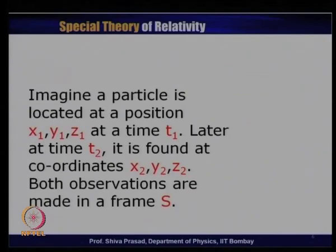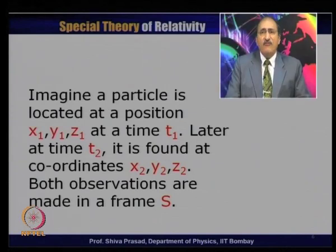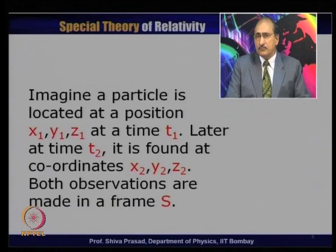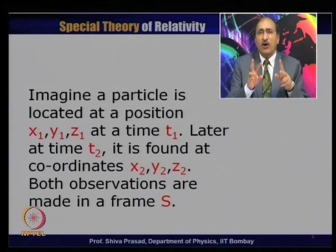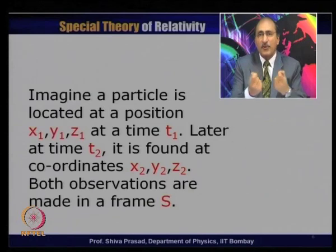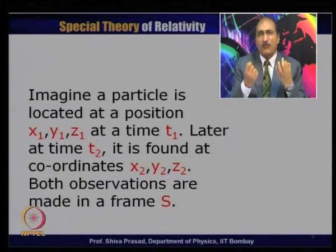A particle is located at position x₁, y₁, z₁ at time t₁ in frame S. At a later time t₂, the same particle is found at coordinates x₂, y₂, z₂. These become the position coordinates of the two events related to the movement of this particle, and both observations are made in frame S.